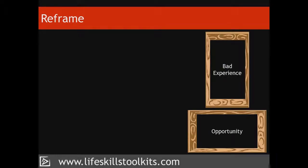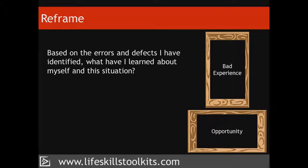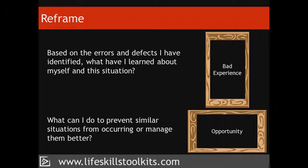Reframe. This final step involves reviewing the errors and defects identified in the previous step, in order to learn valuable lessons about ourselves as well as how to manage similar situations in the future. We're reframing our situation when we choose to view a bad experience as an opportunity to learn and improve ourselves. Answering the following questions will help us to reframe this experience: Based on the errors and defects I've identified, what have I learned about myself and this situation? What can I do to either prevent similar situations from occurring, or manage them better?